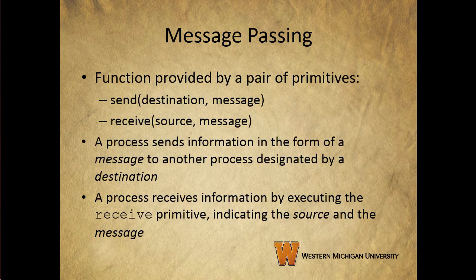Message passing systems can come in many forms and can be implemented in a lot of different ways. In this section, we're going to talk about a general introduction that discusses features typically found in such systems. The actual function of message passing is normally provided in the form of a pair of primitives: a send, which specifies the destination and the message itself, and receive, which takes the source of the message and the message itself.